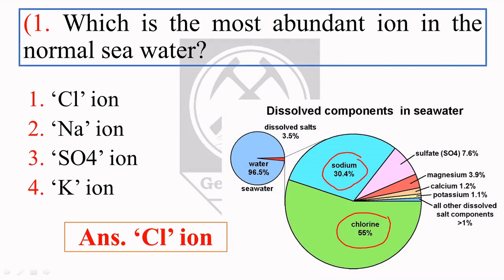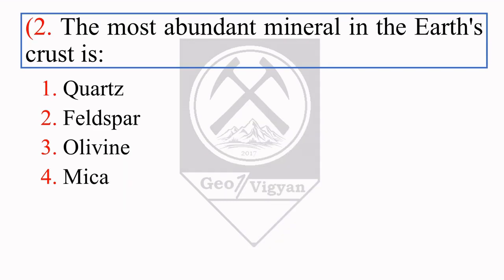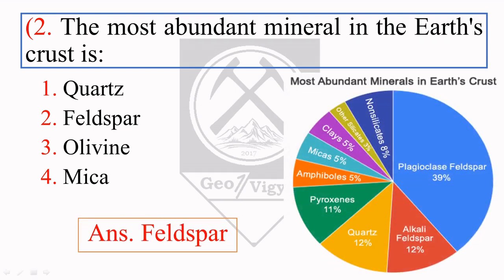The next question is: the most abundant mineral in the earth's crust is? The maximum number of candidates opted for quartz, but the right answer is feldspar. As you can see in this chart, quartz consists of only 12%, but plagioclase feldspar and alkali feldspar consist of approximately 51%. So the right answer is feldspar.